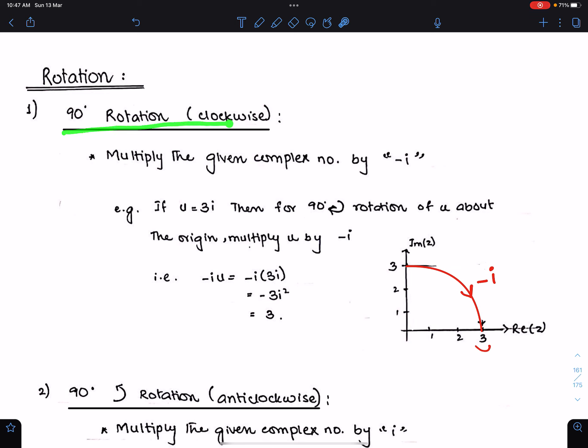Number 1: 90 degree clockwise rotation. For 90 degree clockwise rotation, multiply the given complex number by negative i. For example, if u is 3i, then for 90 degree clockwise rotation of u about the origin, multiply u by minus i.